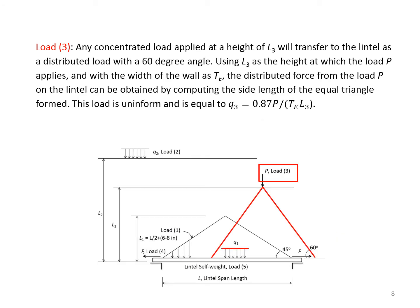Load three is any concentrated load applied at a height of L3 and will transfer to the lintel as a distributed load with a 60-degree angle as shown. Using L3 as a height at which the load P applies and with the width of the wall as Te, the distributed force from the load P on the lintel can be obtained by computing the side length of the equal triangle form. This load is uniform and is equal to Q3 = 0.87P / (Te × L3). Te is the thickness of the wall.